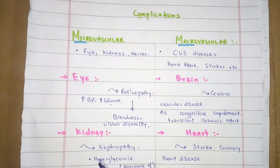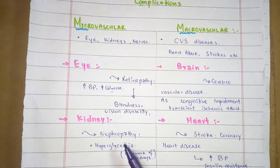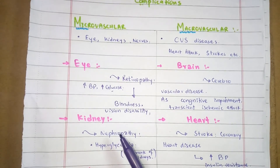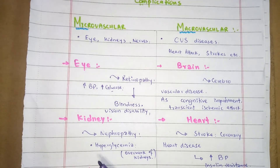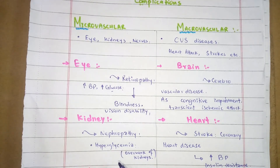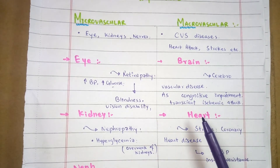In the case of microvascular diseases, the kidney is involved. Damage to the kidney is called nephropathy, which may lead to renal failure. Hyperglycemia — high glucose levels — causes the kidneys to overwork, and high blood pressure damages the small blood vessels, which may result in nephropathy.